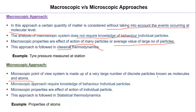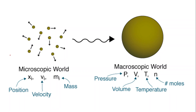In the microscopic approach, the system is made of a very large number of discrete particles known as molecules and atoms. Attention is given to these molecules and atoms, and we need knowledge of the behavior of individual particles to understand their properties. Microscopic properties are the effect of the action of individual particles, and since we use statistical tools to understand the properties, it falls under statistical thermodynamics. An example is the properties of atoms or molecules.